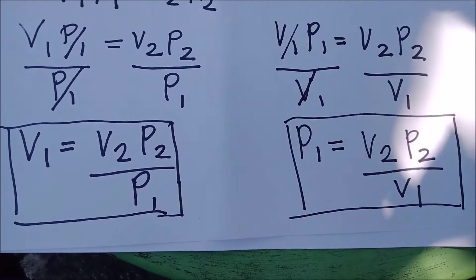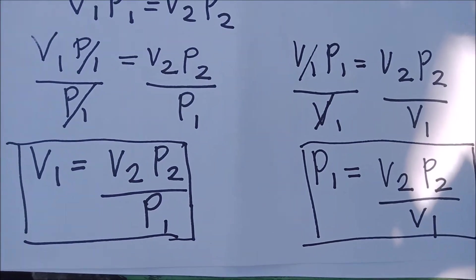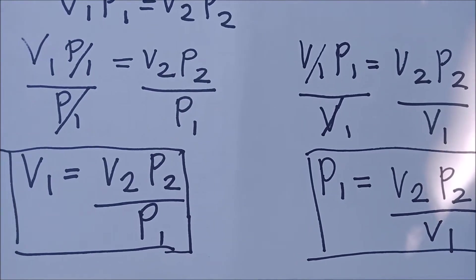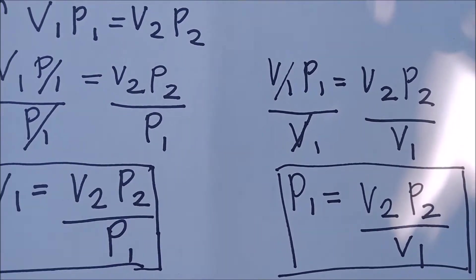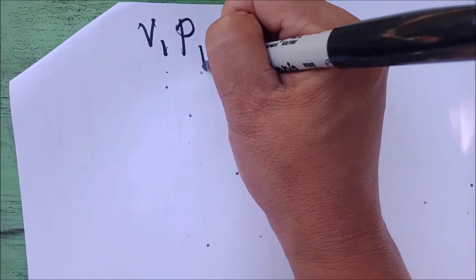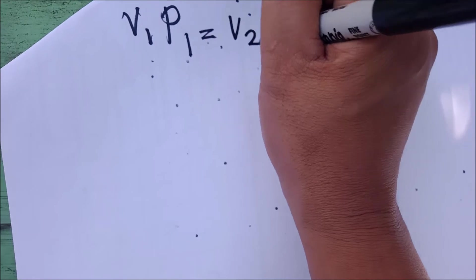We're done transforming the formula so that we can look for V1 or P1 in case it is asking the problem. This time, going back to our starting formula, V1, P1 is equal to V2, P2. Let's say you're looking for V2.